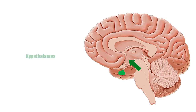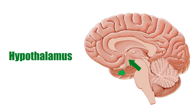The hypothalamus is at the center of a plethora of physiological processes, including but not limited to thermoregulation, osmoregulation, and hormonal regulation. It also works closely with the pituitary gland to modulate endocrine activity based on the body's physiological demands.